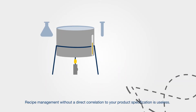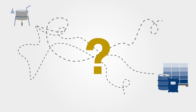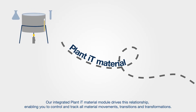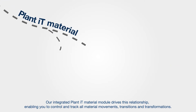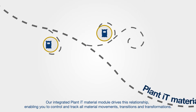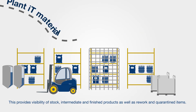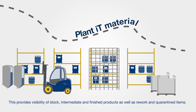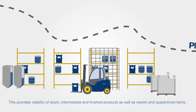Recipe management without a direct correlation to your product specification is useless. Our integrated Plant IT material module drives this relationship, enabling you to control and track all material movements, transitions and transformations. This provides visibility of stock, intermediate and finished products, as well as rework and quarantined items.